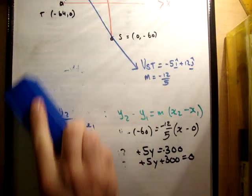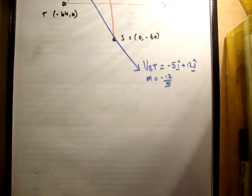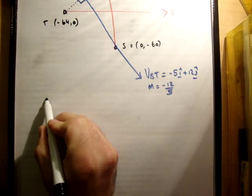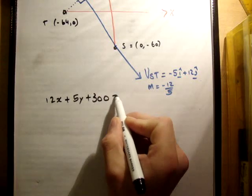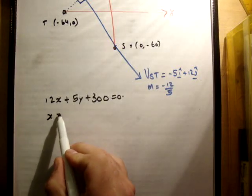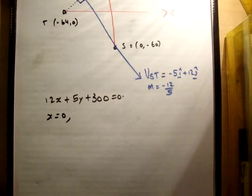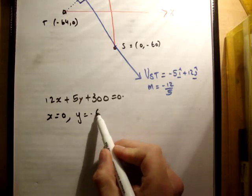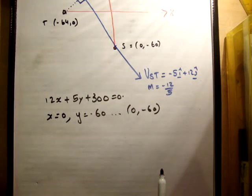Now, how do we convince ourselves that this equation will give us whether or not a point is on the line? Let's write the equation again. We had that 12x + 5y + 300 = 0. Now, are there any other points on this line? Can we get a point on this line? Well, what if we set x equals 0? If x is equal to 0, y is equal to -300/5, so it becomes -60. So a point on this line is (0, -60), and that's the point we've gotten before.